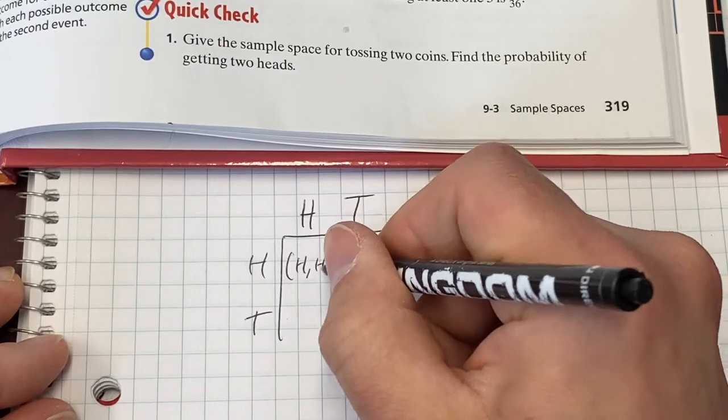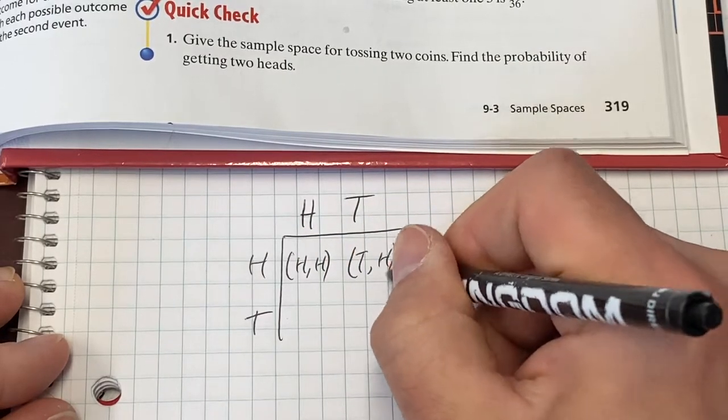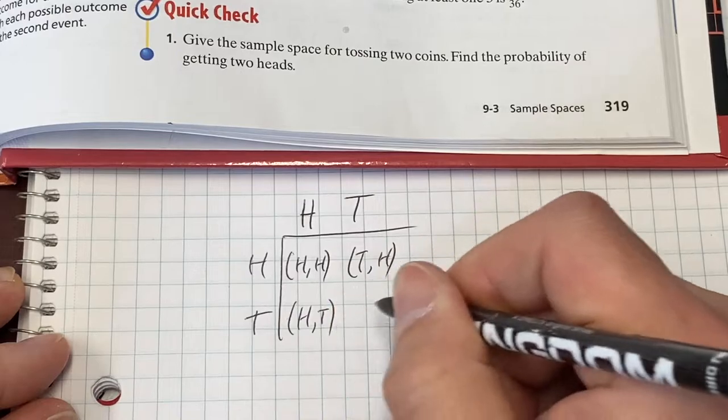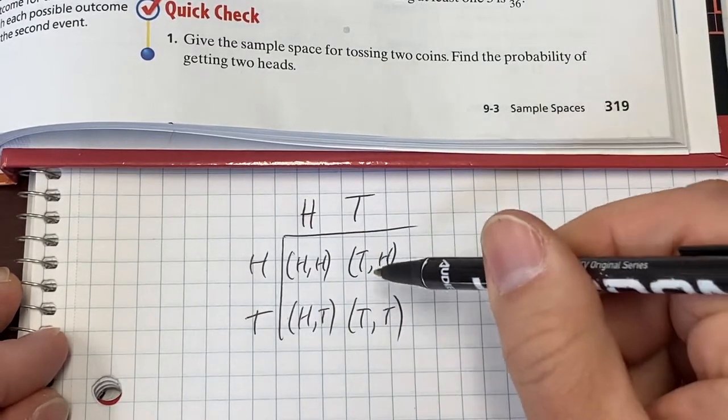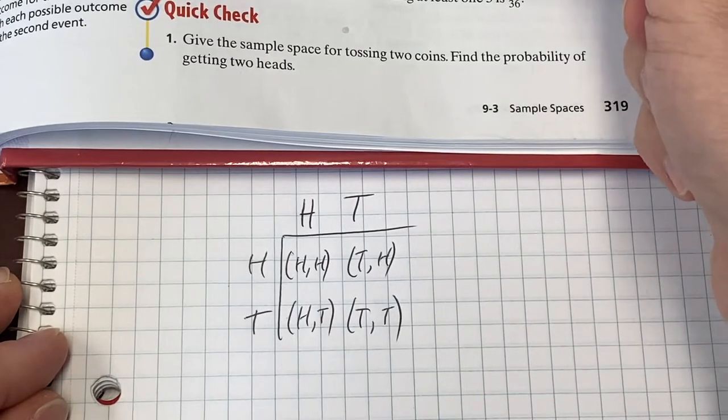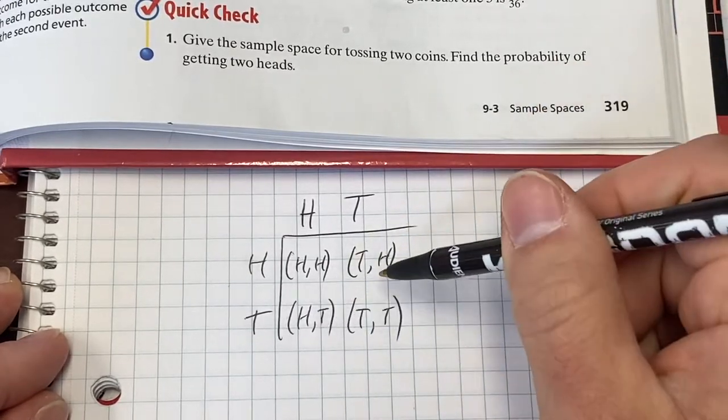We would have heads, heads, tails, heads, heads, tails, tails, tails. There's our sample space. Very, very simple. A lot easier than the die. One that had thirty-six, this one only has four.